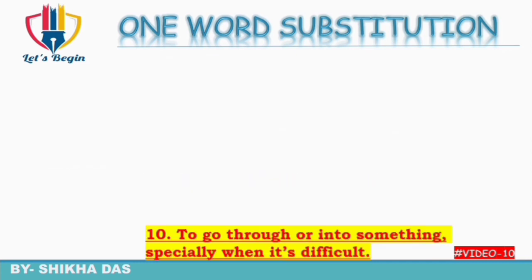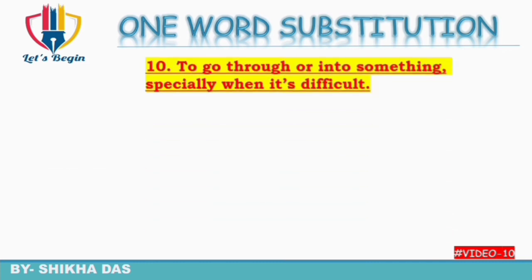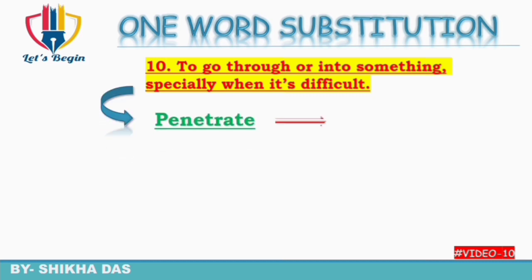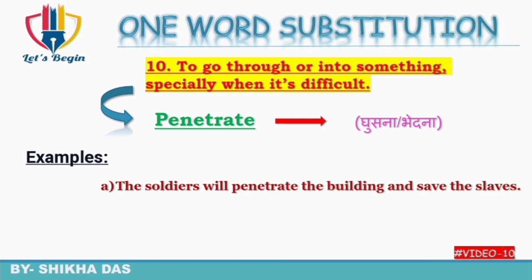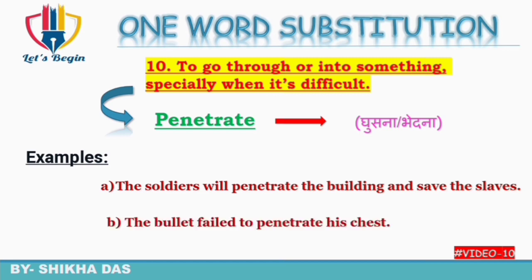Next: to go through or into something, especially when it is difficult — matlab ki kisi cheez ke andar ghusna ya phir usko paar kar jana, especially jab woh difficult ho. Isko kaha jata hai 'penetrate'. Penetrate ko Hindi mein kehte hain 'ghusna' ya 'bhedna'. Examples: 'The soldiers will penetrate the building and save the slaves.' 'The bullet failed to penetrate his chest.'